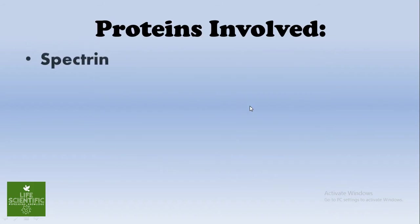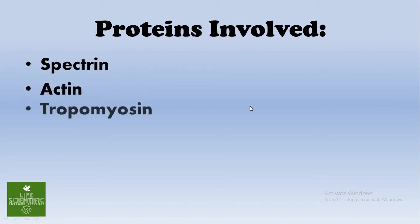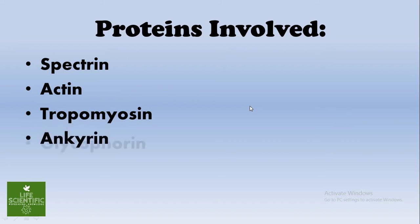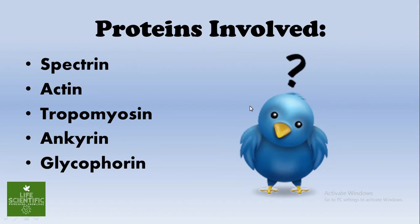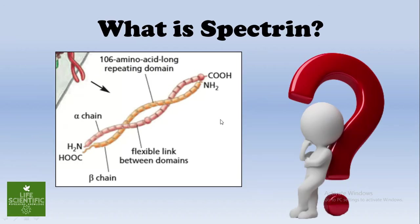The first protein is spectrin, the second is actin, then tropomyosin, adducin, and glycophorin. Don't get confused by these names — I shall be explaining their importance later on. First, we need to understand what spectrin is.